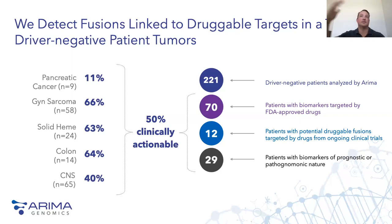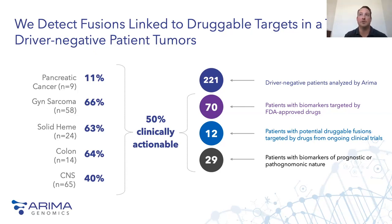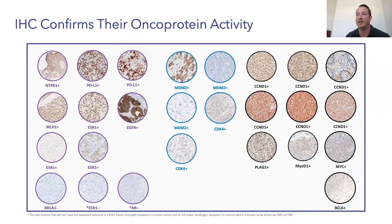We've analyzed a range of different tumor types depending on the nature of our collaborations. We've had really good yields in sarcomas, solid hematological malignancies like lymphomas, colorectal tumors, CNS tumors, and less success in tumors like pancreatic tumors. We've also tried to validate our results at the protein level using IHC.